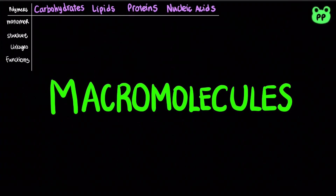All living things are made up of four classes of large biological molecules: carbohydrates, lipids, proteins, and nucleic acids. A polymer is a long molecule consisting of many similar building blocks, known as monomers.